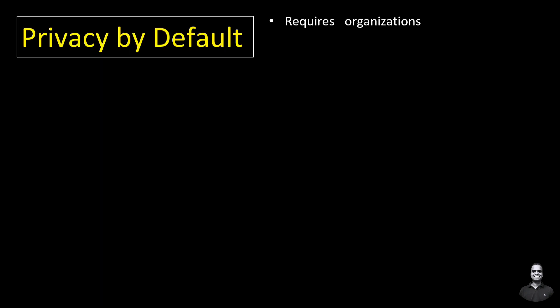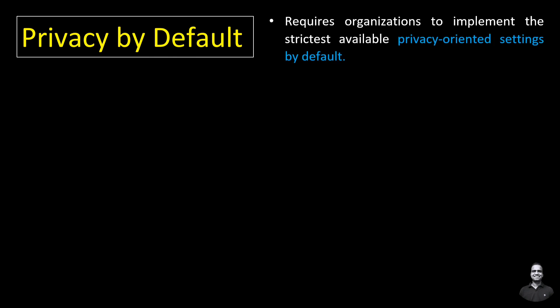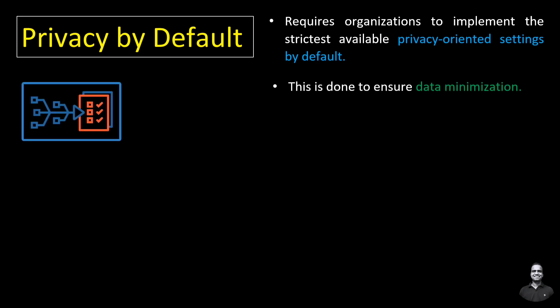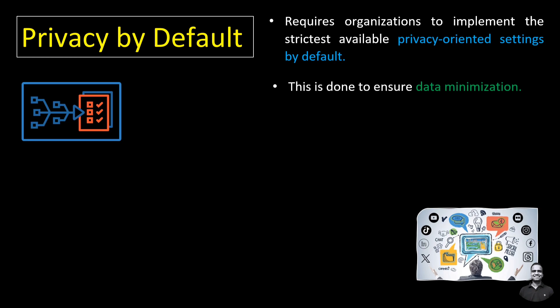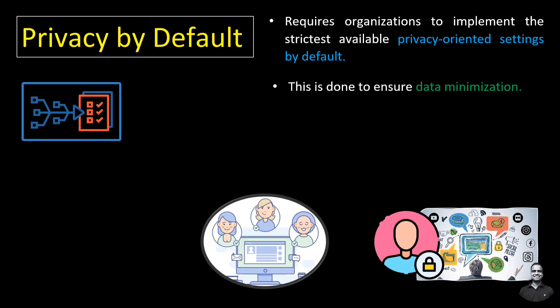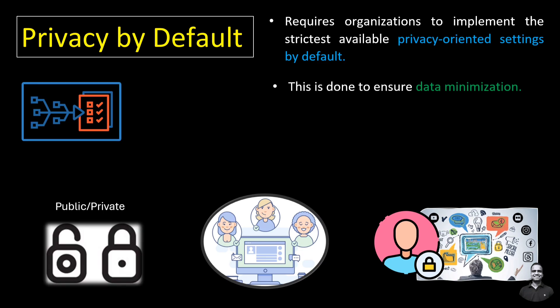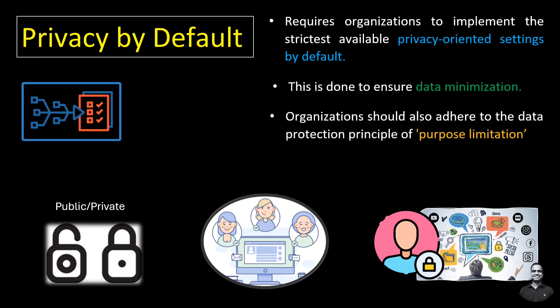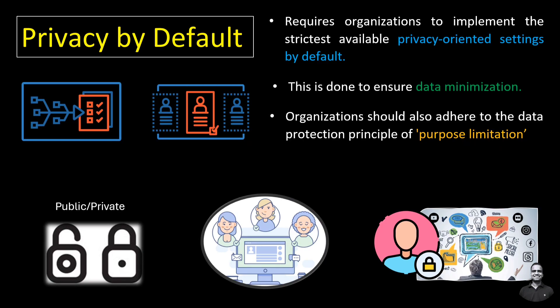Privacy by default requires organizations to implement the strictest available privacy-oriented settings by default. This is done to ensure data minimization, meaning only such processing is carried out which is strictly necessary to achieve specified and lawful purposes. For example, a social media platform by default sets user profiles to be private and only visible to the user's contacts, requiring active user action to make their profile public. Organizations should also adhere to the principle of purpose limitation, which mandates collecting and processing only data that is relevant and limited to specified and legitimate purposes.